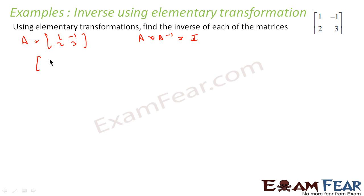So I can say that 1 minus 1, 2 and 3 into A inverse is nothing but I. I'll take 2 by 2 matrix. If it is 2 by 2, my goal is to convert this guy into 1, 0, 0, 1.